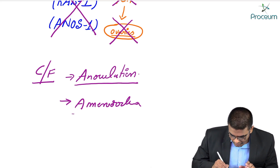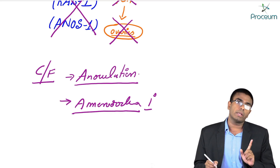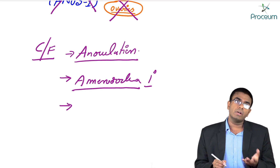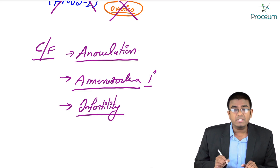Amenorrhea — specifically primary amenorrhea. A female with Kallmann syndrome will present to the clinic with the chief complaint of primary amenorrhea. These females can also have a problem with fertility, because without ovulation she cannot become pregnant — so infertility can also be seen.